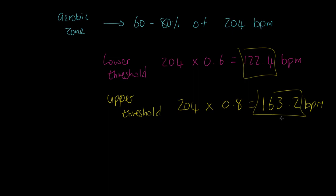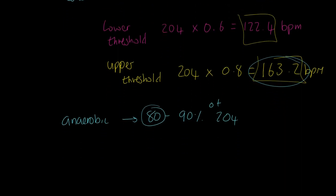So remember, if we're doing anaerobic zone, let me just put it in here. If we do anaerobic, we know it's 80 to 90% of 204. So we know the 80% figure, that's the 163.2, which is the upper part of the aerobic threshold.